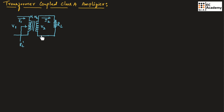If we consider a transformer, it consists of two sections. The first one is the primary side and the second one is the secondary side. In the primary side, the voltage is V1 and the current is I1, and the resistor across the primary side is RL dash or R1. The voltage across the secondary side is V2, the current flowing through the secondary is I2, and the resistor across the secondary side is RL or R2. Here N1 represents the number of turns in the coil at the primary side and N2 represents the number of turns in the coil at the secondary of the transformer.